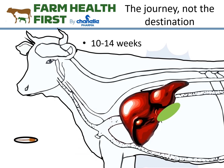Once eaten, they arrive in the intestine, they excyst — or lose that helmet — and they turn into a baby liver fluke: an early immature.